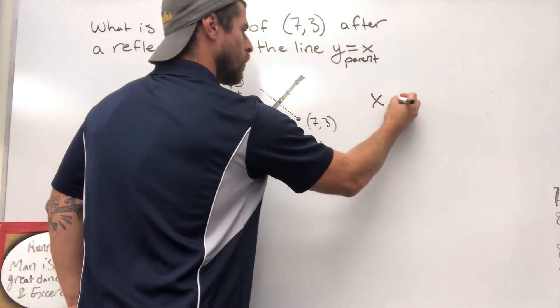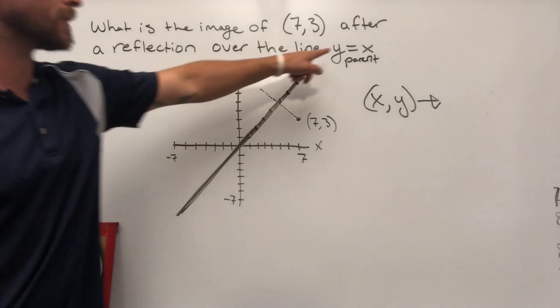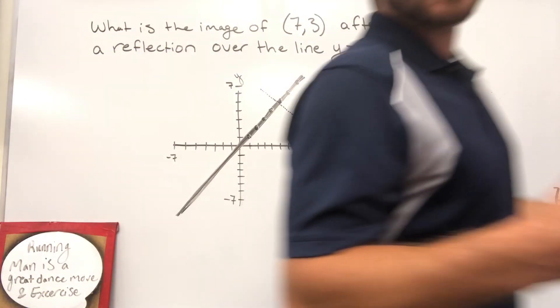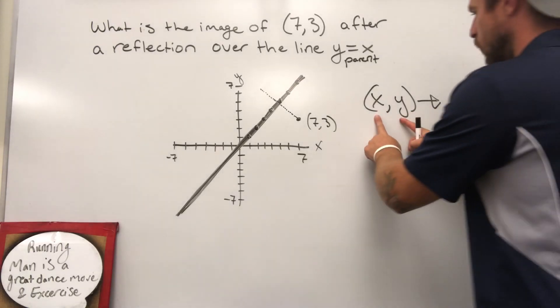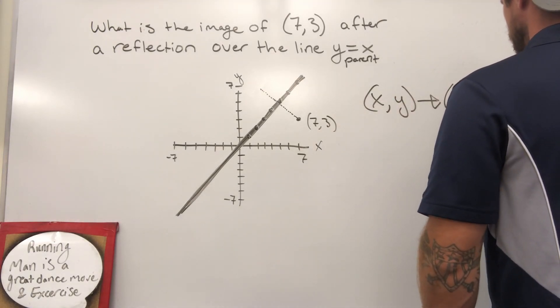(x, y) is going to convert to what when you reflect over y equals x? Okay, so that rule is as simple as taking (x, y) and flipping them to (y, x).